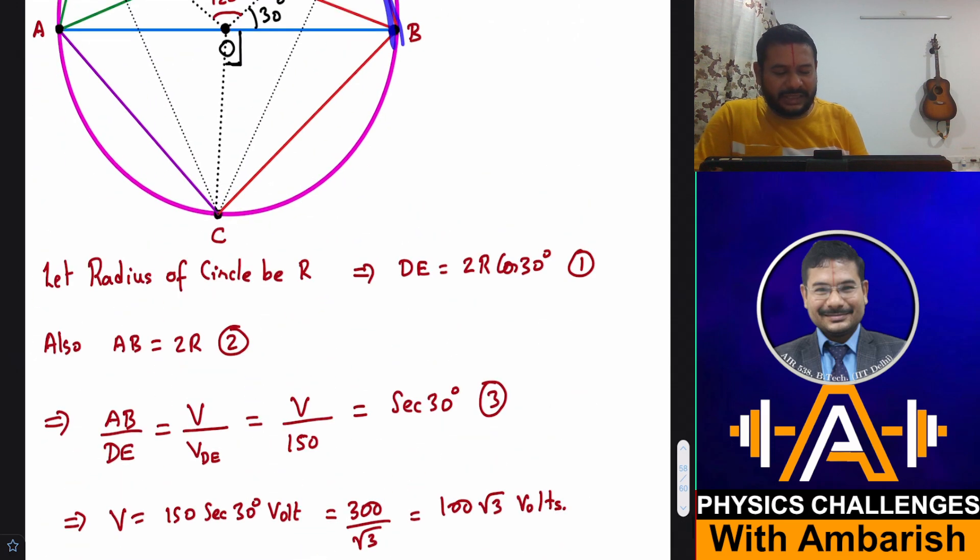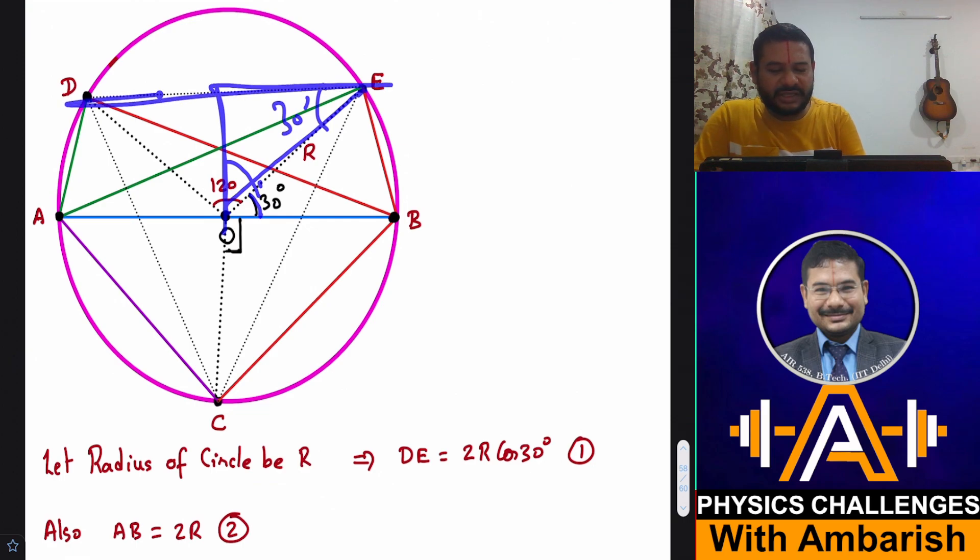Now things are very simple. Let's say R is the radius of this circle. Then OEB is an isosceles triangle. This angle is also 15 degree. This is R sin 15 and R sin 15. So EB becomes simply 2R sin 15. Let circle radius be R. Then DE is 2R cos 30 degree. This angle is 30 degree. So DE is nothing but 2R cos 30 degree. I know that DE is 2R cos 30, which is also equal to 150 volt. And also AB is nothing but 2R, so generator voltage is this.